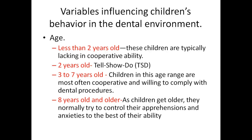For children of three to seven years old, children in this range are often cooperative and willing to comply. Proper familiarization with the techniques and behavior shaping strategies are valuable tools to influence the child's behavior. For eight-year-olds and older, children normally try to control their apprehensions and anxieties to the best of their abilities. If the procedure proves to be stressful to these children, they may revert to undesirable behaviors. Proper familiarization techniques and behavior strategies are valuable tools to influence the child's behavior positively at this stage.